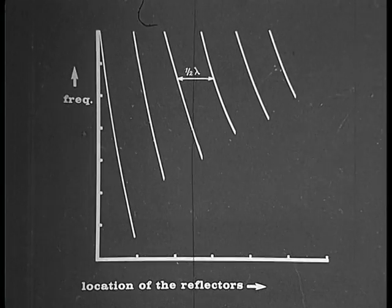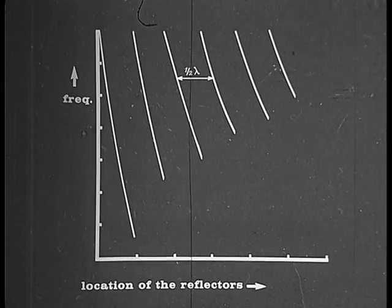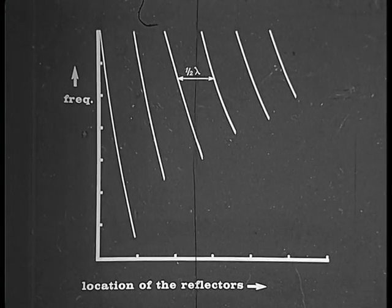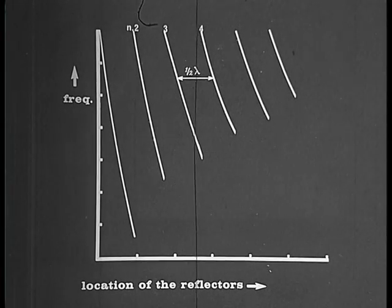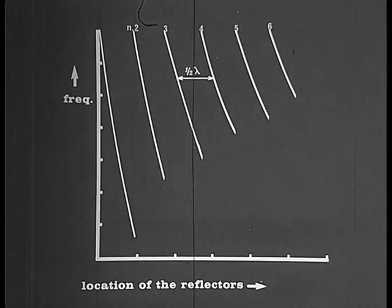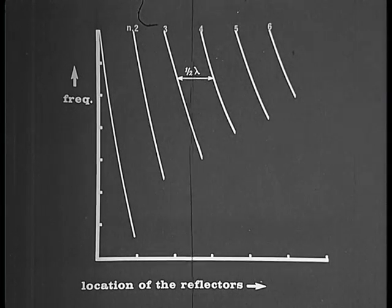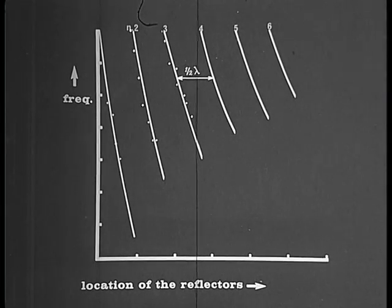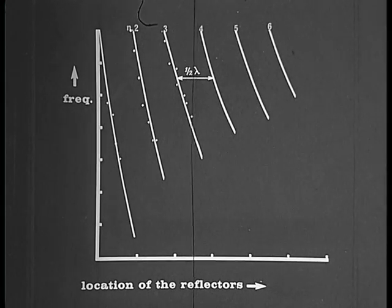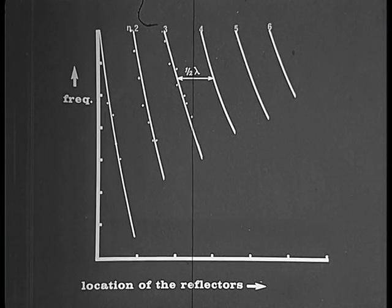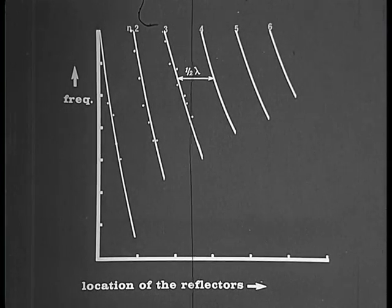We now make a graph of the frequency versus the location of the reflectors for N equals 2, N equals 3, 4, etc. In this graph, the lines are predicted by theory. The dots represent the measurements. It is seen that the theory fits the facts, and we may conclude that the feedback model gives a possible solution.